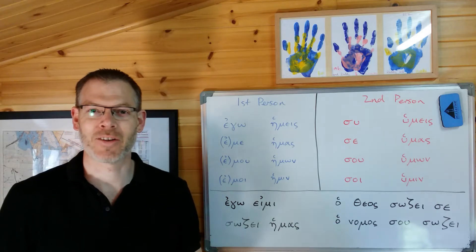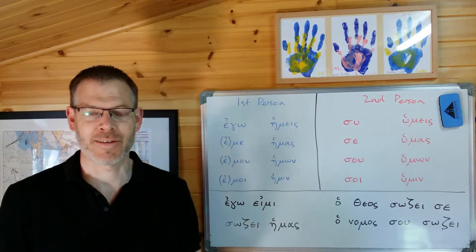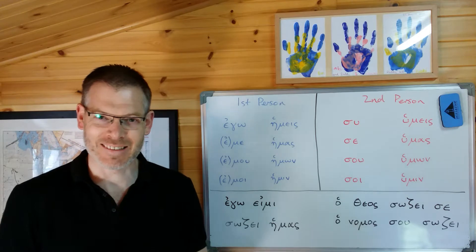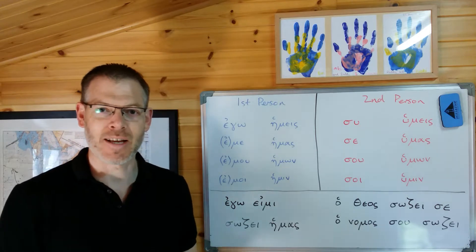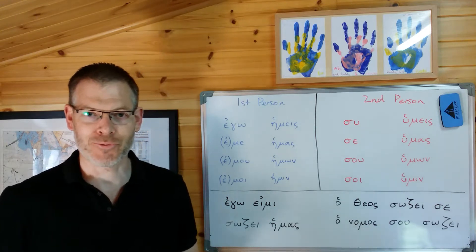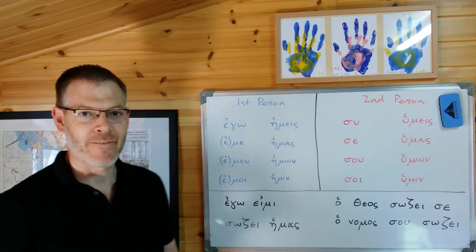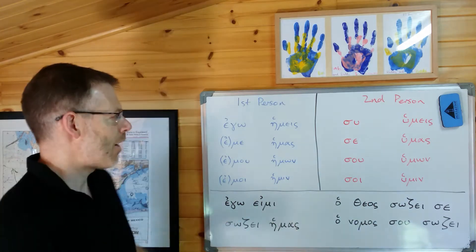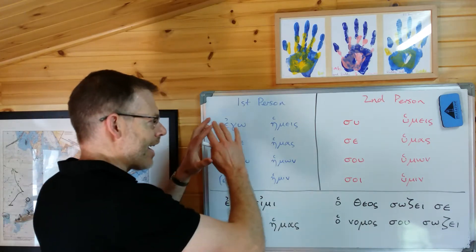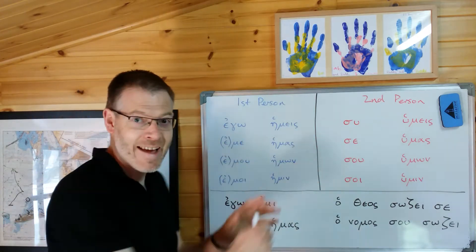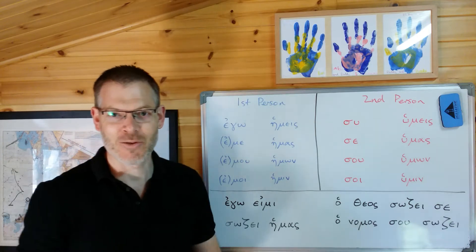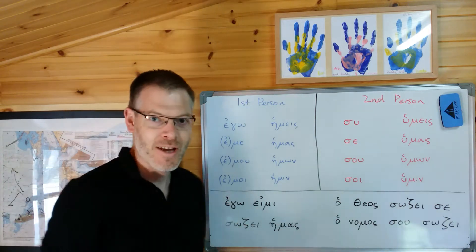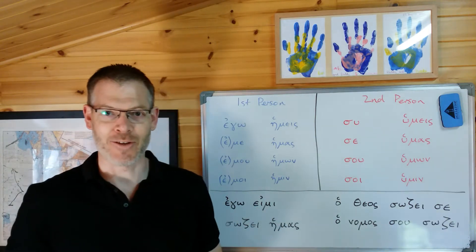Hi everybody, welcome back. We're looking today at Jeremy Duff's Elements of New Testament Greek. We're in chapter 9 still, and we're on section 9.3, where we're going to be looking at the first and second person pronouns. I want to show you the layout of the declension and some patterns that you'll be able to spot to help you remember them, and then just a couple of notes about how they're used.